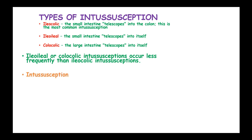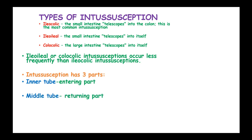Intussusception has three parts: the inner tube, which is the entering part; the middle tube, or the returning part; and the outer tube, which is the intussuscipiens.